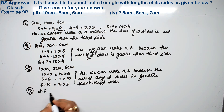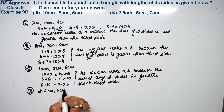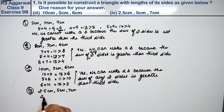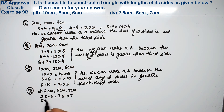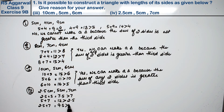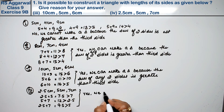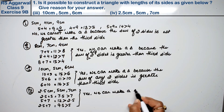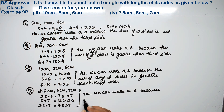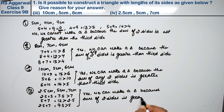Fourth part: the sides are 2.5 cm, 5 cm, and 7 cm. Checking: 2.5 plus 5 is 7.5, which is greater than 7. Then 5 plus 7 is 12, which is greater than 2.5. And 2.5 plus 7 is 9.5, which is greater than 5. All cases are fulfilled, so yes — we can make a triangle, because the sum of any two sides is greater than the third side.